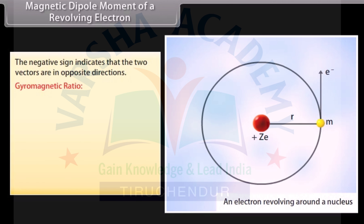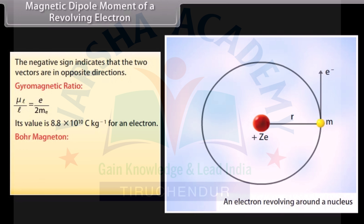The gyromagnetic ratio mu_L / L = e / 2M_e, and its value is 8.8 × 10¹⁰ Coulomb per kilogram for an electron. The Bohr magneton mu_B = eH / 4πM_e, and its value is the constant 9.27 × 10⁻²⁴ A·m².